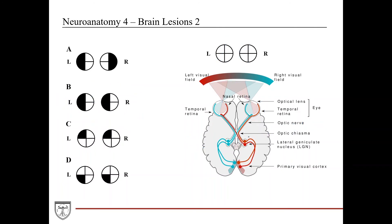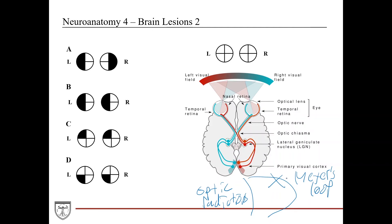After the LGN, fibers split into Meyer's loop and the optic radiations. Affecting Meyer's loop — which carries inputs from the contralateral superior quadrants — on the right side means you lose the left superior quadrant of both the left eye and the right eye. This results in a left-sided superior quadrantanopia, corresponding to answer C. Given that this is a temporal lobe tumor and the surgery is within the temporal lobe, Meyer's loop could definitely be at risk.